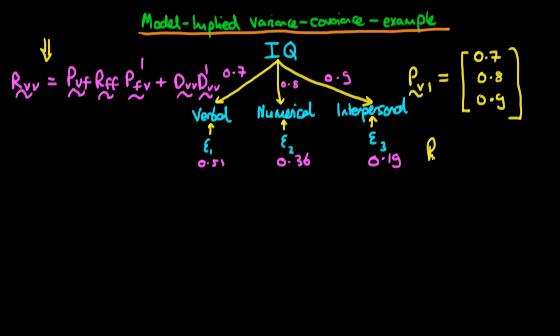What about the matrix RFF? Well, in this example, we've only got one factor, so we're just going to be talking about the variance of that particular factor, which, if we're dealing with standardised variables, as we are here, is just going to be equal to 1. OK, so that's PV1 and RFF sorted out.